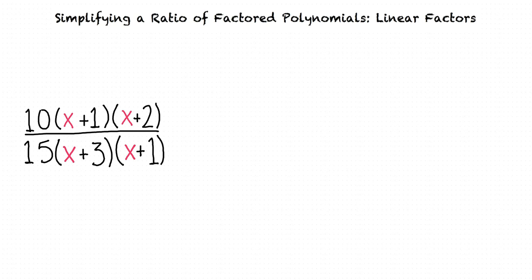Let's begin by simplifying the coefficients. We can see the factor 10 in the numerator and 15 in the denominator. They have a greatest common factor of 5, right? Right. So, we can divide both the numerator and the denominator by 5.